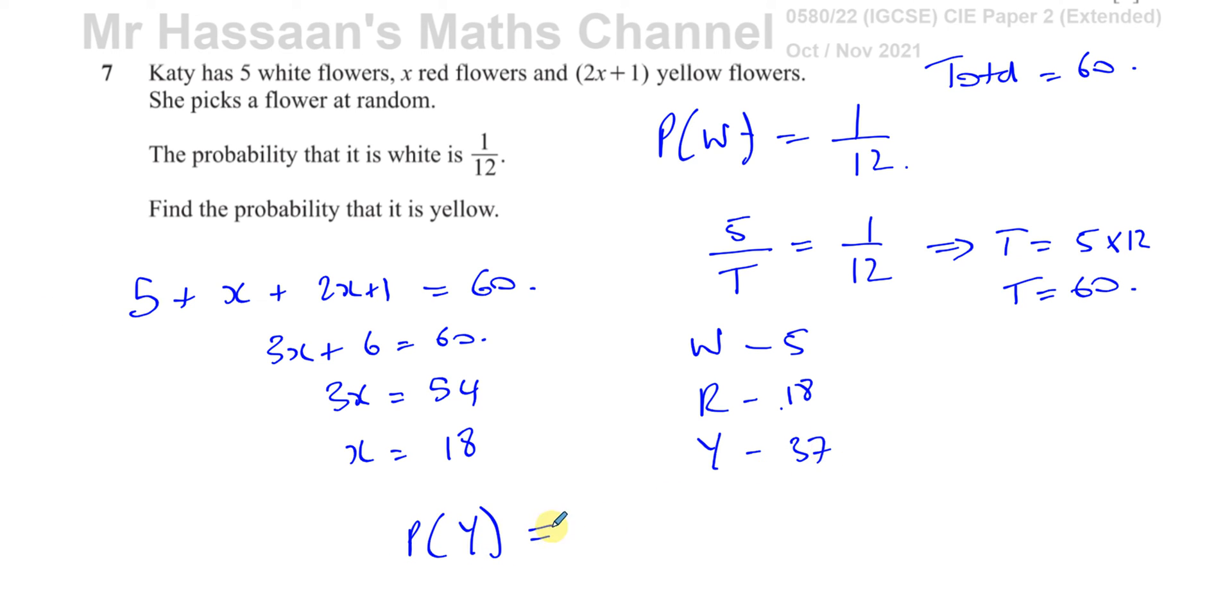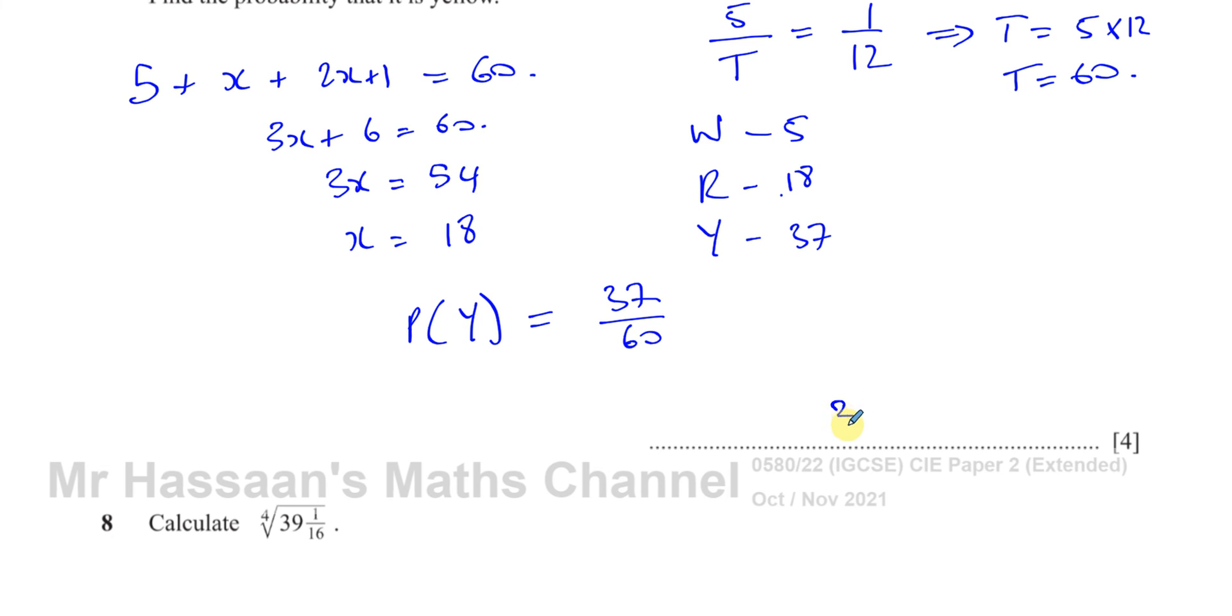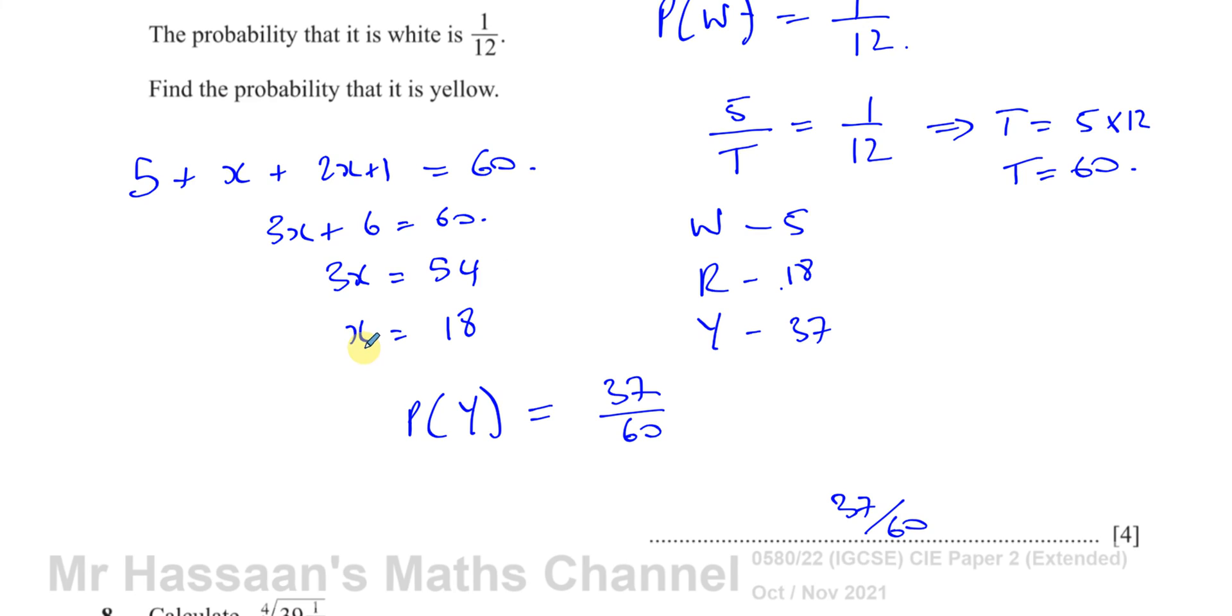We've got to find the probability of picking a yellow flower, which is the number of yellow flowers, 37, over the total, which is 60. That doesn't simplify. So that's the answer, 37 over 60. That answers question number 7 from this paper.